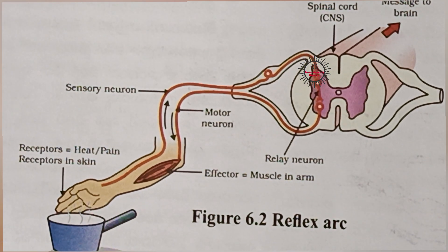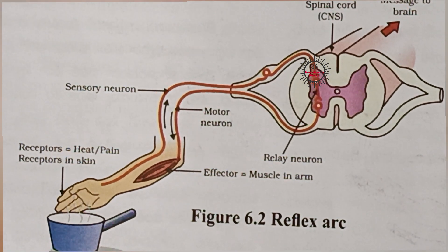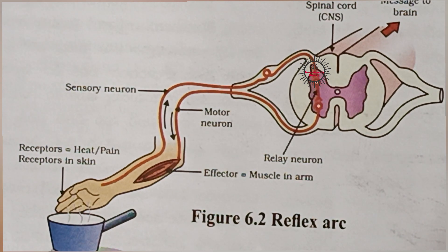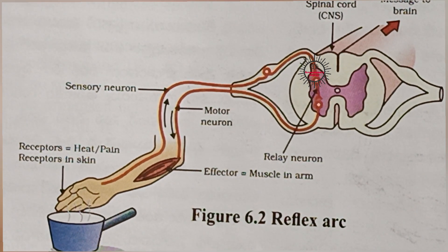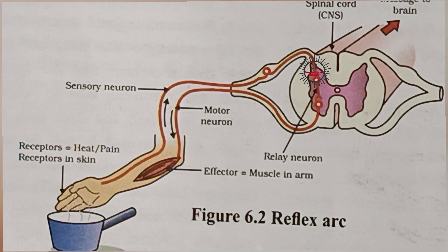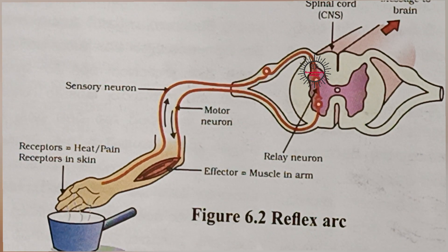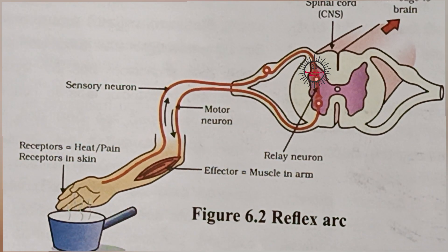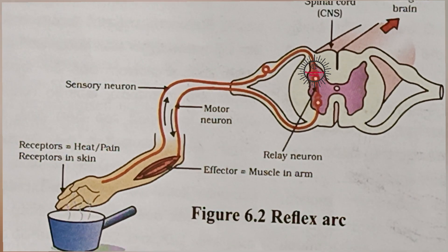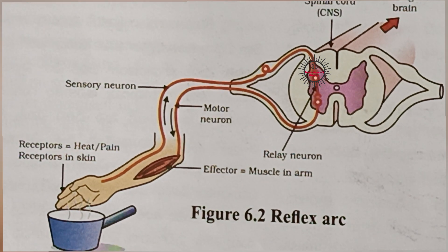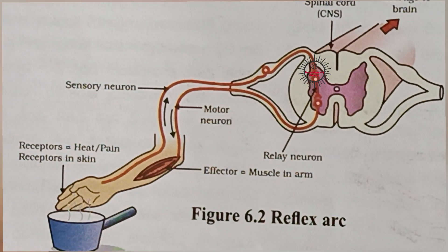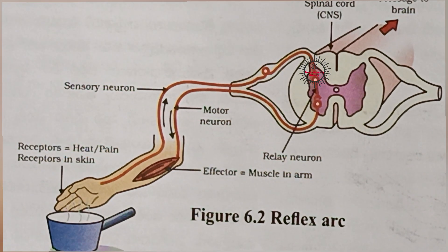Take another example: when bright light focuses on our eyes, we will immediately shut our eyelids. Here the eyes are the receptors — they receive that information and pass it to the sensory neuron, which takes it to the spinal cord. The relay neurons in the spinal cord analyze that information and give the response: shut your eyelids. That response is taken by the motor neuron from the relay neuron and passed to the target organ — the eyelids — which shut our eyes and protect our retina from the bright light. That is about reflex actions and the reflex arc.